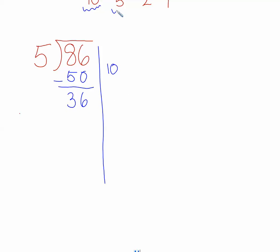So now let's see, can we make a group of 5 out of 36? I think I can, because I know that 5 times 5 equals 25. So yes, I can make a group of 5, because my bottom number is smaller than my top number. I can subtract 25 from 36. 6 minus 5 is 1, and 3 minus 2 is 1.